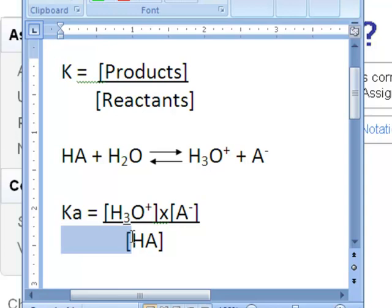The opposite is true. The larger the denominator, the larger the HA, the smaller the value of the constant, therefore the smaller the Ka.